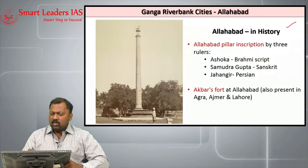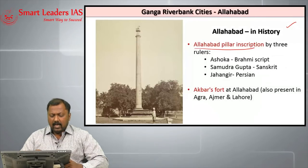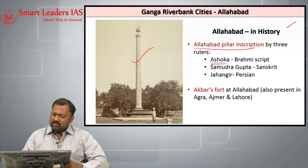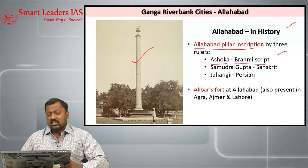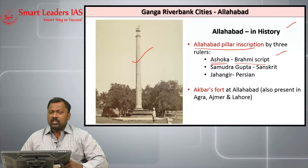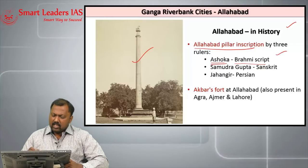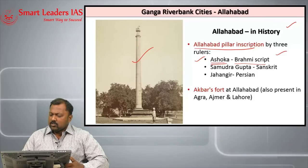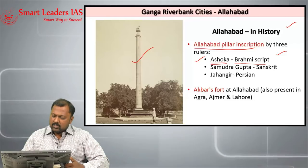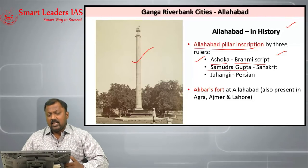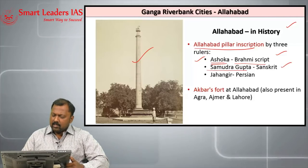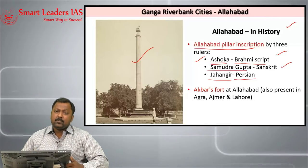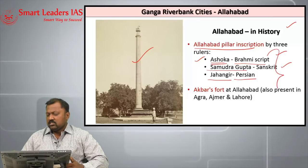Historically, Allahabad has the Allahabad pillar inscription. This pillar was installed by the great emperor Ashoka of the Maurya dynasty, who wrote Edicts on it in Brahmi script giving instructions to the people. The pillar is also important because subsequent rulers added to it — Samudragupta of the Gupta dynasty wrote about his achievements and conquests on the same pillar, and later the Mughal emperor Jahangir wrote about his administration in Persian on the same Allahabad pillar inscription.